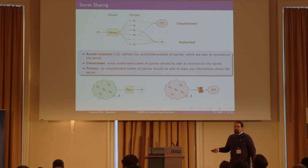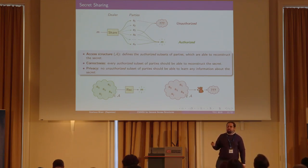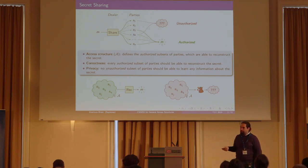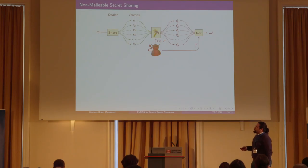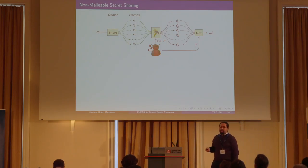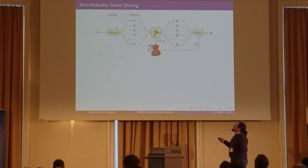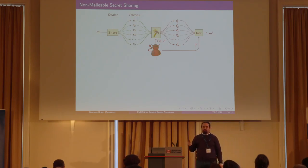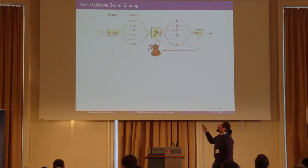Now, suppose you are an invalid attacker that wants to learn, at all costs, some information about the message, and suppose you cannot fully corrupt an entire authorized subset of parties. Then you could try to slightly modify all the shares — for example, installing a malware or via electrical signals — and you could try to see the result of this modification to the message.